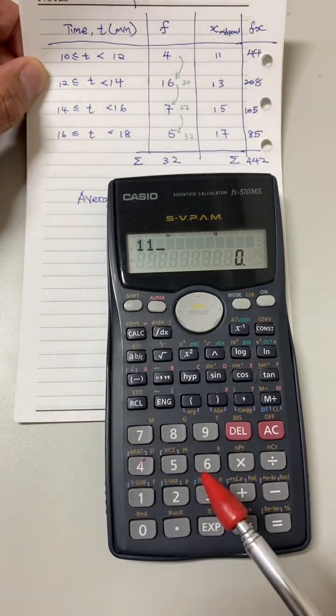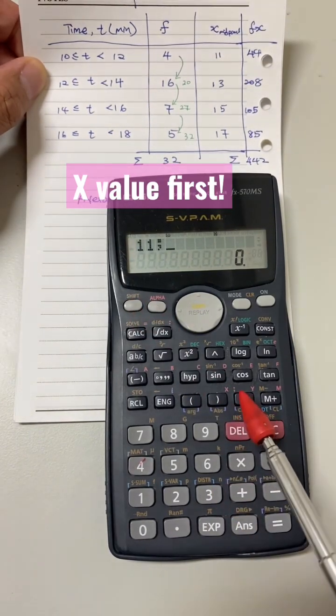Mode 2 times, press 1. Then, key in the x value first, which is the midpoint, so 11.